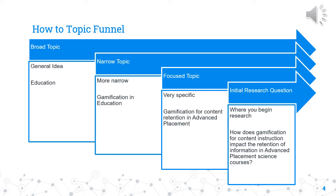The broad topic is the general idea — the large body of knowledge and or information that you are interested in. For example, the broad topic here is education. The narrow topic is one that is slightly more specific; it moves in on one particular piece of this larger area. For example, the narrow topic here in education is gamification in education.